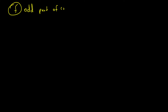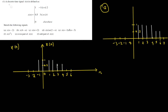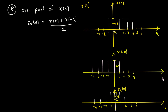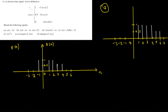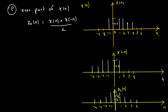The odd part of x of n — whenever we deal with odd and even, in my last video I did the even part of x of n. For the even part, the equation is x of n equals x of n plus x of minus n, divided by two. The x of n graph is the first one I derived using the piecewise function, and that's the same graph I have right here.